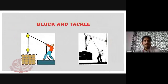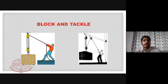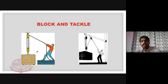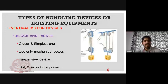The first vertical motion device is the block and tackle, which is the oldest and simplest method. It uses only mechanical power with no other power source. It uses one or two pulleys and is an inexpensive device, though it wastes manpower. Nowadays it is used rarely.